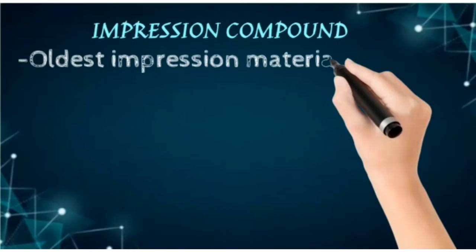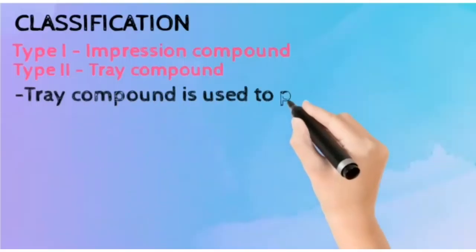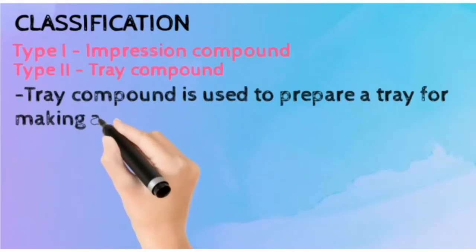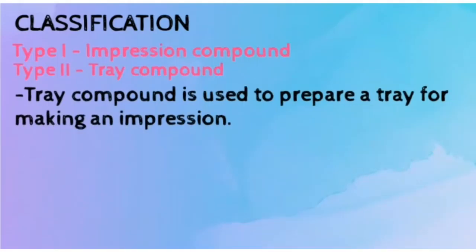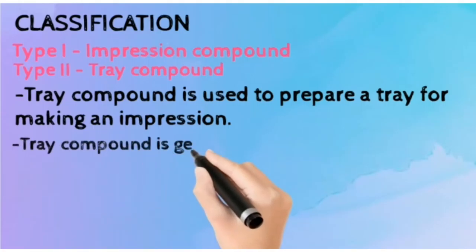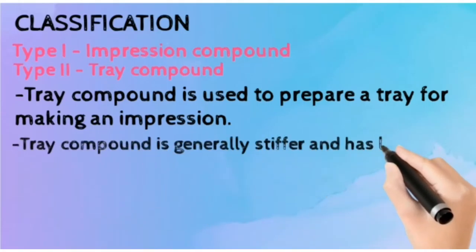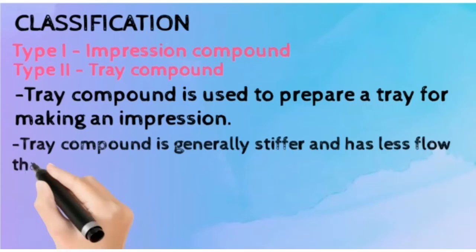There are two types in its classification: Type 1 is impression compound and Type 2 is tray compound. Tray compound is basically used to prepare a tray for making an impression. It is generally stiffer and has very less flow than the regular impression compound.